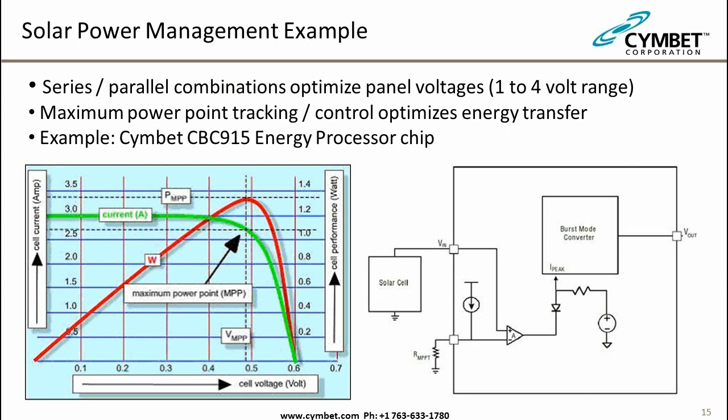For micro energy harvesting solar systems, you can combine solar cells in series or parallel to get from roughly one to four volts depending on your desired input range, then track the maximum peak power point to optimize energy transfer. A good example is the SIMBIT CBC915 energy processor chip, which has embedded algorithms to always find the maximum peak power point for both variable impedance transducers such as solar and constant impedance transducers such as thermoelectric generators and vibrational harvesters.